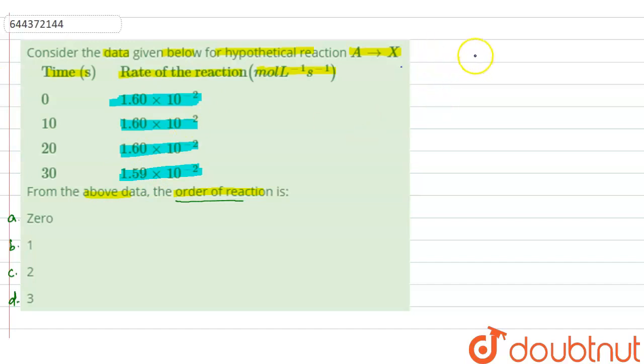Now, we know that we are having this reaction A to X. A is here reactant. And here X is product.